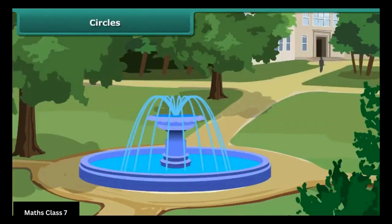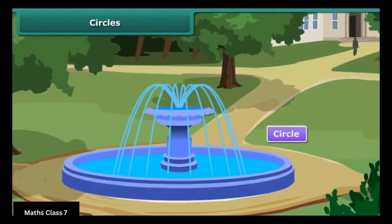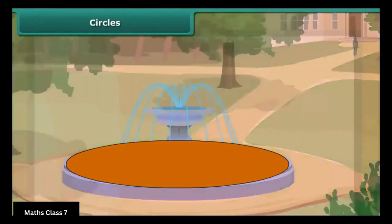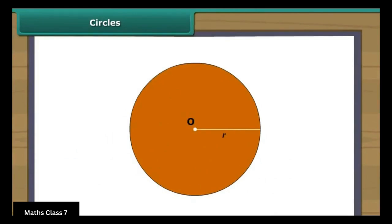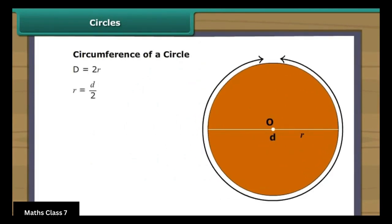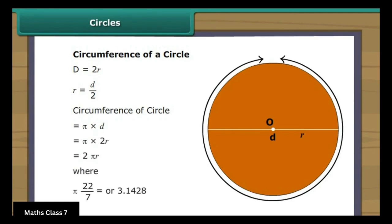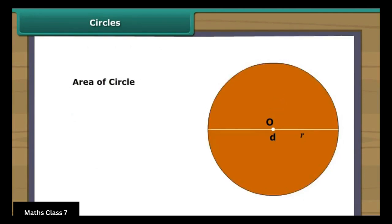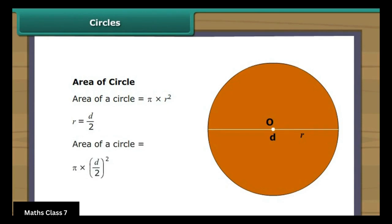Circles. Students, have you noticed the shape of the fountain? The fountain is in the shape of a circle. Can you measure the circumference of the circle? Yes. If you know the radius of the circle, then by using the formula of circumference of a circle: the circumference is the distance around a circular region, in other words, the boundary of the circle. The circumference of a circle is the product of the constant pi and its diameter, or twice the product of pi and the radius of the circle. Can we also find the area of the circle? Yes. If we know the radius, the area of a circle is equal to pi times the square of the radius. We can also express the area of a circle in terms of diameter. Since the radius is half of the diameter, the area equals pi times the square of half the diameter.